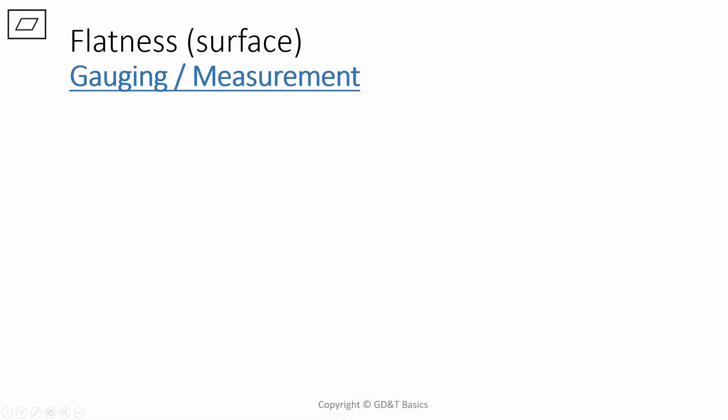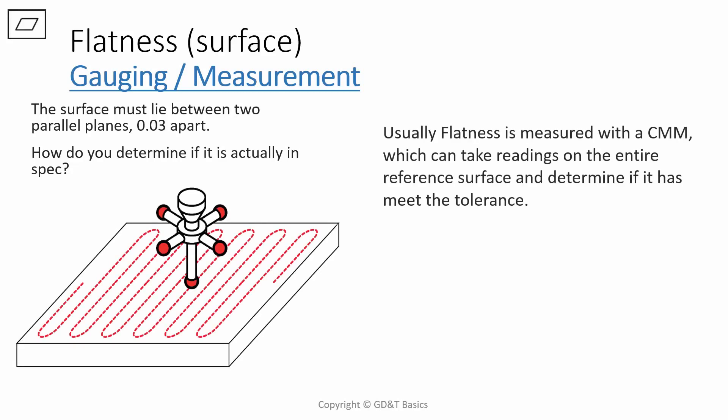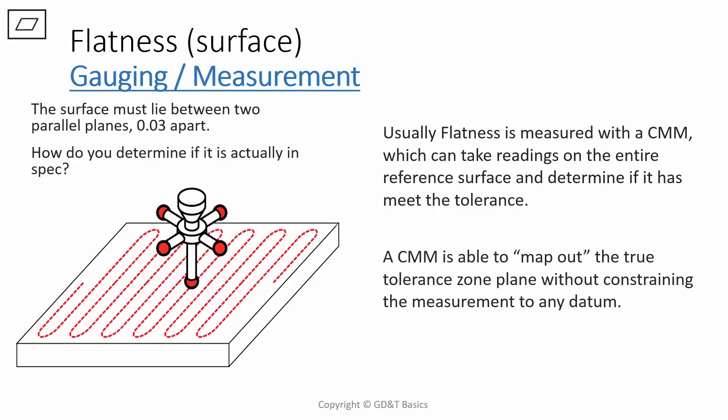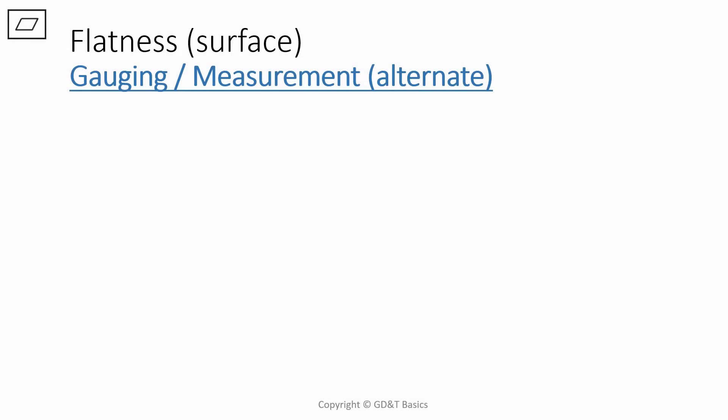Let's discuss how you would actually measure for flatness. So the surface must lie between two parallel planes. How do you determine if this is actually met? Well, one of the most common ways to measure flatness is with a CMM. This way you can take readings on the entire surface and determine if it has met the tolerance. A coordinate measuring machine is able to map out the true tolerance zone plane without constraining the measurement to any datum. Remember, the tolerance zone can be oriented in any way, as long as it's between two parallel planes.